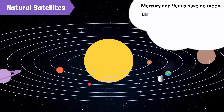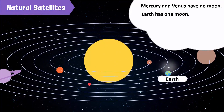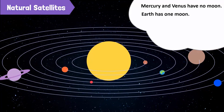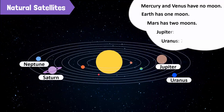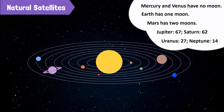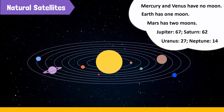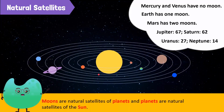Mercury and Venus have no moon. The Earth has one moon. Mars has two moons. Jupiter, Saturn, Uranus, and Neptune also have different numbers of moons. Moons are natural satellites of planets, and planets are natural satellites of the sun.